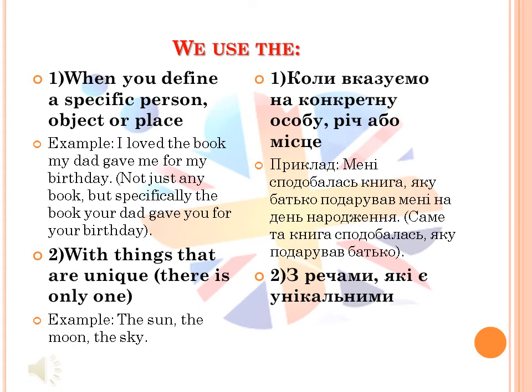We use definite article the when we define a specific person, object, or place. For example: 'I loved the book my dad gave me for my birthday.' Not just any book, but specifically the book your dad gave you for your birthday.